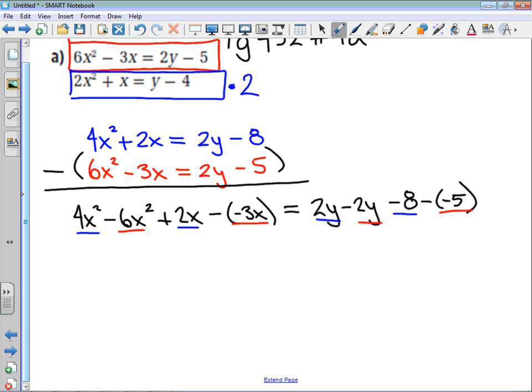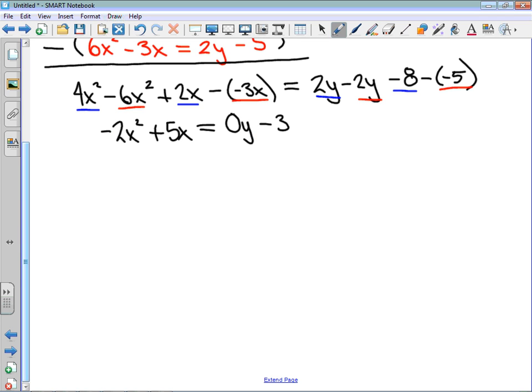Well, 4x squared minus 6x squared is negative 2x squared. 2x minus negative 3x is positive 5x. 2y minus 2y, I'm going to write it even though it always makes my skin crawl a little bit. That is 0y, and then negative 8 minus negative 5 is negative 3. Now, I wrote that just to show where that y term went. You should never write 0y, because 0 times anything is 0. So what this equation becomes is negative 2x squared plus 5x is equal to negative 3.